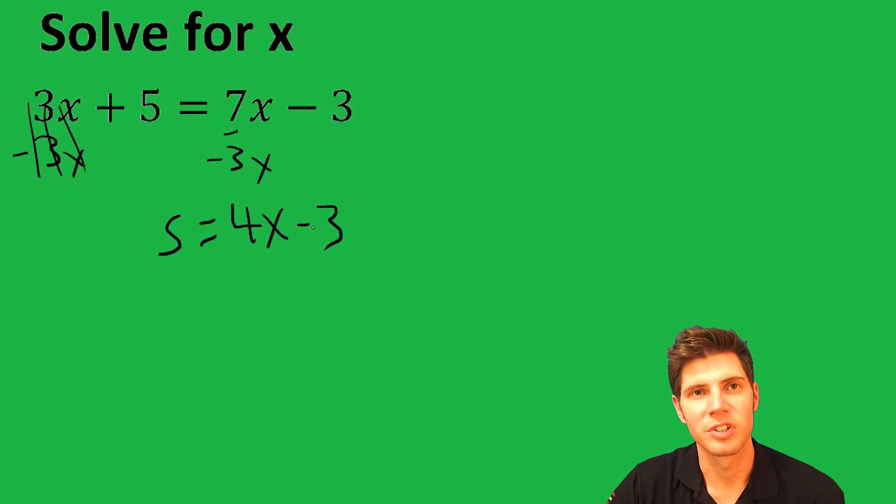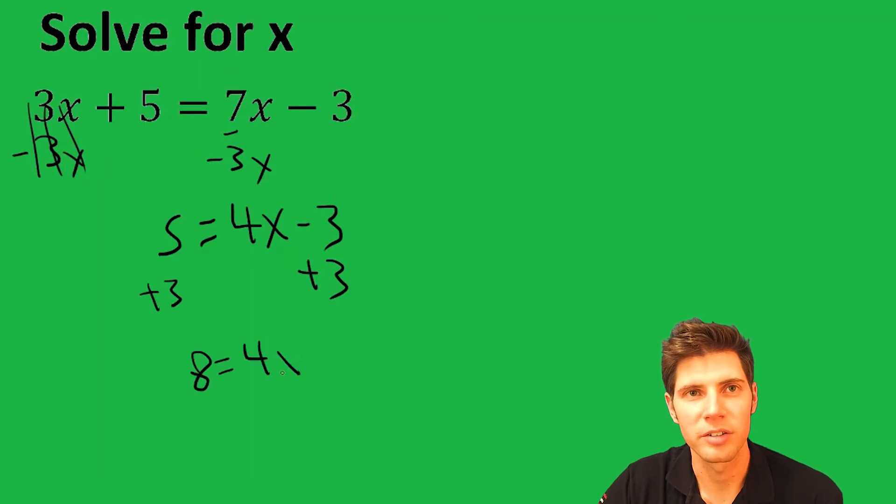Now we just want to solve for x. We've got a negative 3 here, we're going to add 3 to both sides. That's 8 equals 4x, and we're going to divide both sides by 4 to get rid of the 4x. And we get 2 equals x.